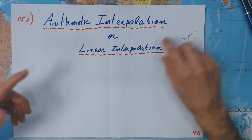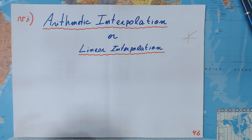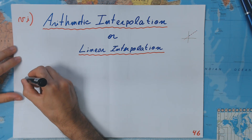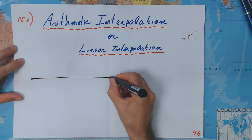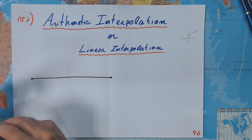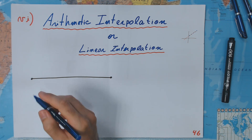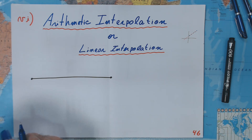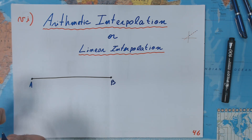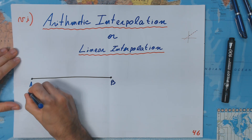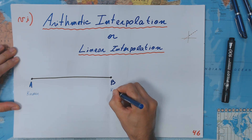Now, what is interpolation? Well, interpolation is, for instance, when we have this. Let's suppose we have one number — I'm going to make a line here — and another number. So here we have a known number. Let's say we have a number A and another number B. They are known numbers.